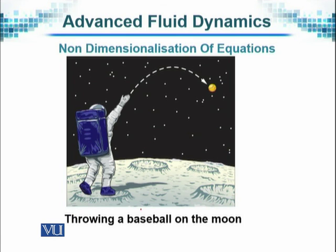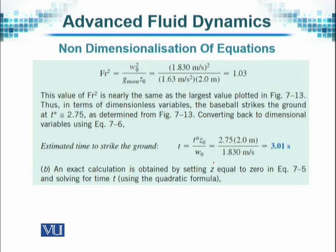This is an image of an astronaut trying to throw the baseball at an angle of 5 degrees, and we want to know how much time it will take to touch the surface of the moon. The square of the Froude number turns out to be 1.03. Note that because it is a dimensionless parameter, it has no units attached to it. This is the square of the Froude number due to the square root in the denominator; we can take the square root of 1.03 to get the Froude number whenever needed.